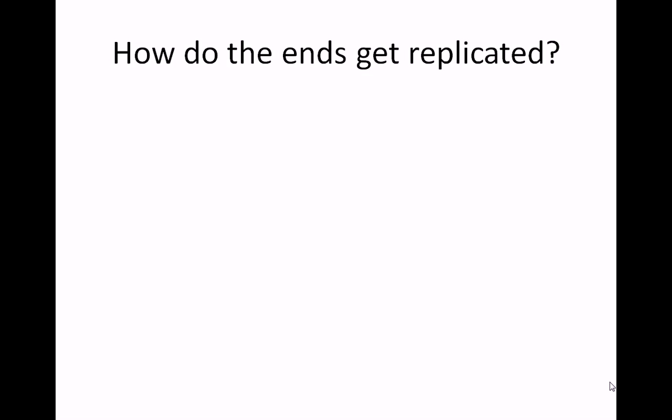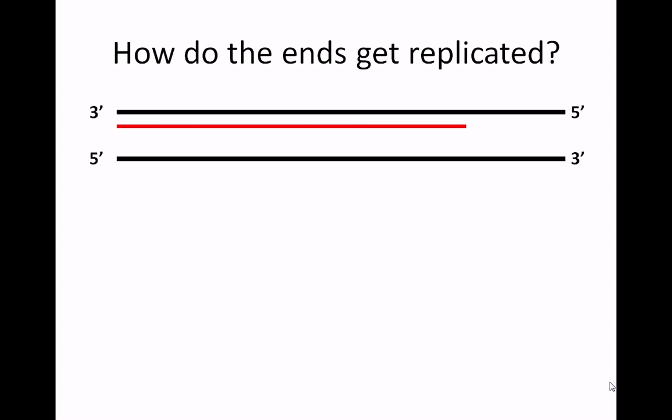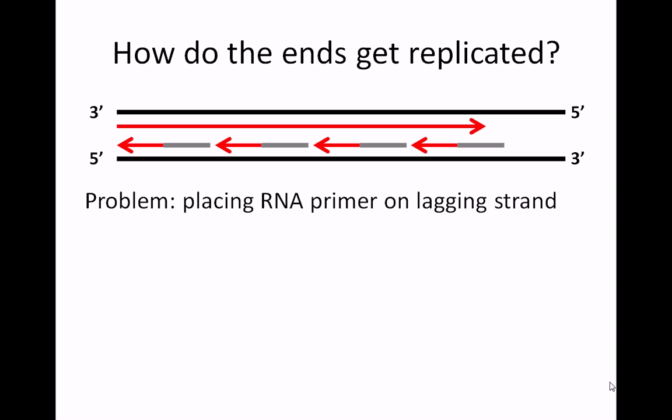The steps of DNA replication that you just reviewed work perfectly fine in the middle of chromosomes. But what happens at the ends? The leading strand is synthesized continuously and can be extended to the end of the chromosome. But each fragment of the lagging strand is synthesized in the opposite direction. And ultimately, there is nowhere for the RNA primer to be placed.